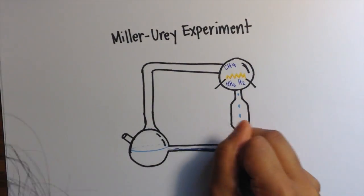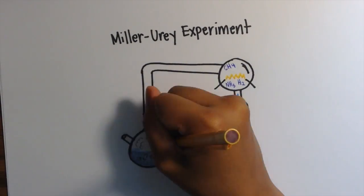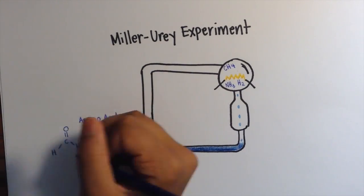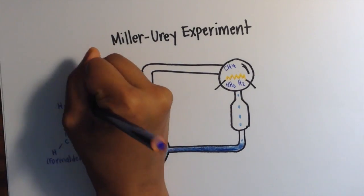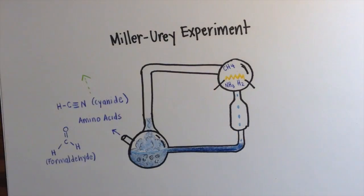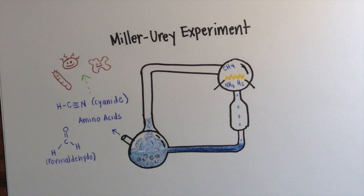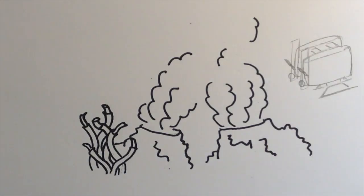In the Miller-Urey experiment, simulations of a methane-rich ocean produced amino acids and other organic compounds like formaldehyde and cyanide, which contributed to the creation of abiotic molecules years later.